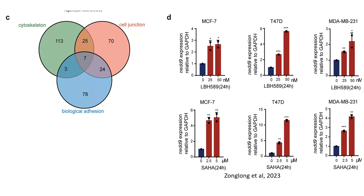Panel C identifies seven genes shared among pathways for cytoskeleton organization, cell junction formation, and biological adhesion, which are directly linked to cell migration. Panel D presents qRT-PCR results showing significant upregulation of NET9 mRNA in MCF7, T47D, and MDA-MB231 cells after treatment with LBH589 and Saha, with expression increasing in a dose-dependent manner and results statistically validated.